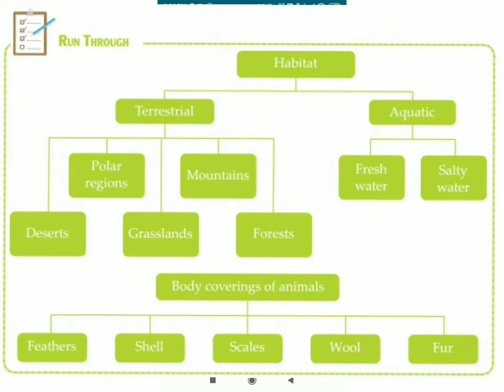Habitat is the place where an animal lives. According to its habitat, animals are divided into two categories: terrestrial and aquatic. Aquatic includes freshwater and saltwater. Terrestrial habitat includes forests, grassland, deserts, polar regions and mountains.